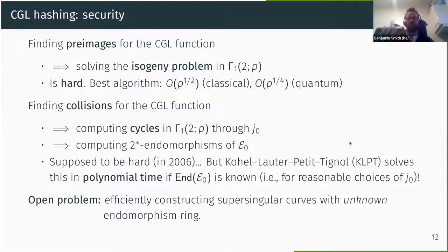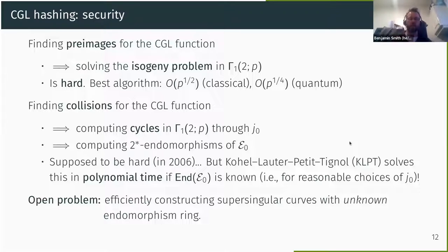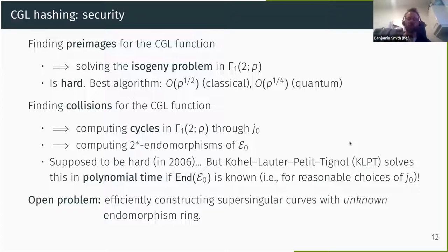This is a problem: we don't really know how to construct a random-looking supersingular curve whose endomorphism ring we don't know, without taking a random walk from a curve whose endomorphism ring we do know — like J-invariant zero or 1728, or some reduction mod P of a CM curve. So in theory this is still a tricky problem, but in reality, given the kinds of starting vertices we have, this is polynomial time. Collision resistance is therefore problematic for this function, but pre-image resistance is still interesting.